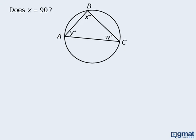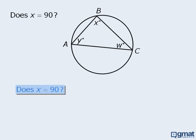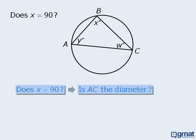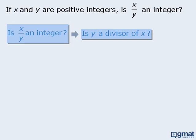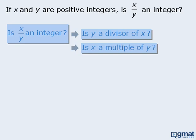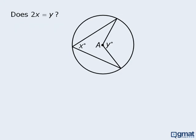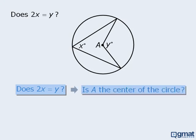What about this one? The target question asks: does x equal 90? Another way to phrase this is: is AC the diameter of the circle? Here we are told that x and y are positive integers, and the target question asks: is x over y an integer? This is a frequently tested concept related to integer properties. We can rephrase this as: is y a divisor of x? Or: is x a multiple of y?